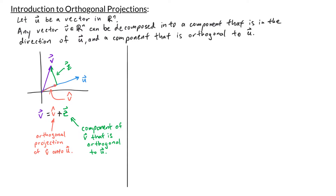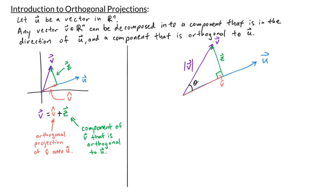Given u and v, let's find v-hat and z. We already know what direction v-hat goes in — we need to find how long it is. In this picture we have a right triangle because z is orthogonal to u, forming a 90-degree angle. The hypotenuse of this triangle is the length of v. If the angle between u and v is theta, then the length of v-hat equals the length of v times cosine theta.